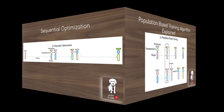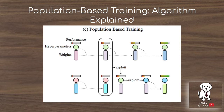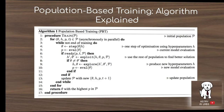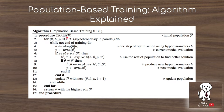Population-based training is a really interesting idea. You have a population of models that each have their initial weights and initial hyperparameters sampled from some distribution. These models are trained until some criterion is reached, and then there is a mechanism for exploring and exploiting. The exploit technique has the model look at the population and decide it would rather be a better model — so it'll take that model's weights and hyperparameters, modify the hyperparameters in some way, and then continue training. The explore step then searches for new hyperparameters.